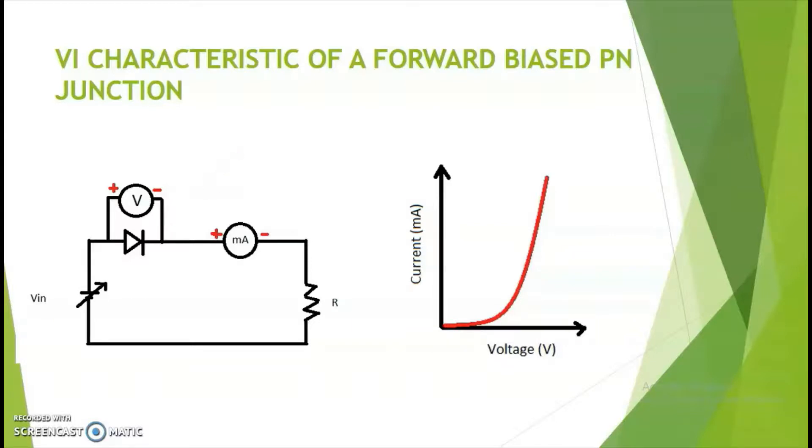Voltmeter is connected in parallel and ammeter is connected in series since voltage is same in parallel branches and current is same when connected in series.